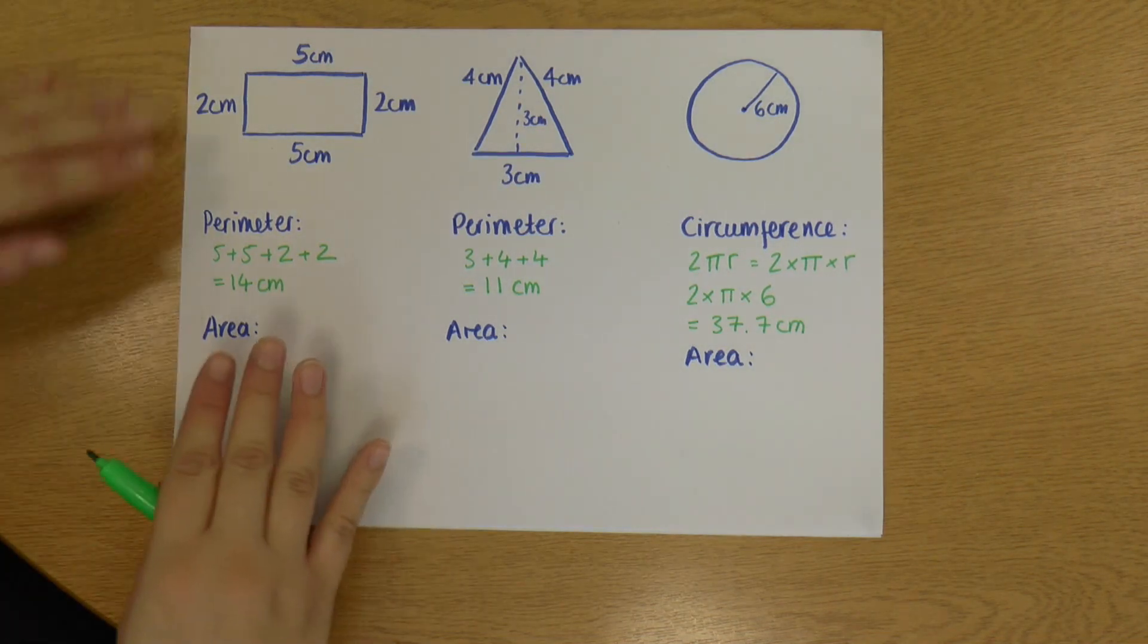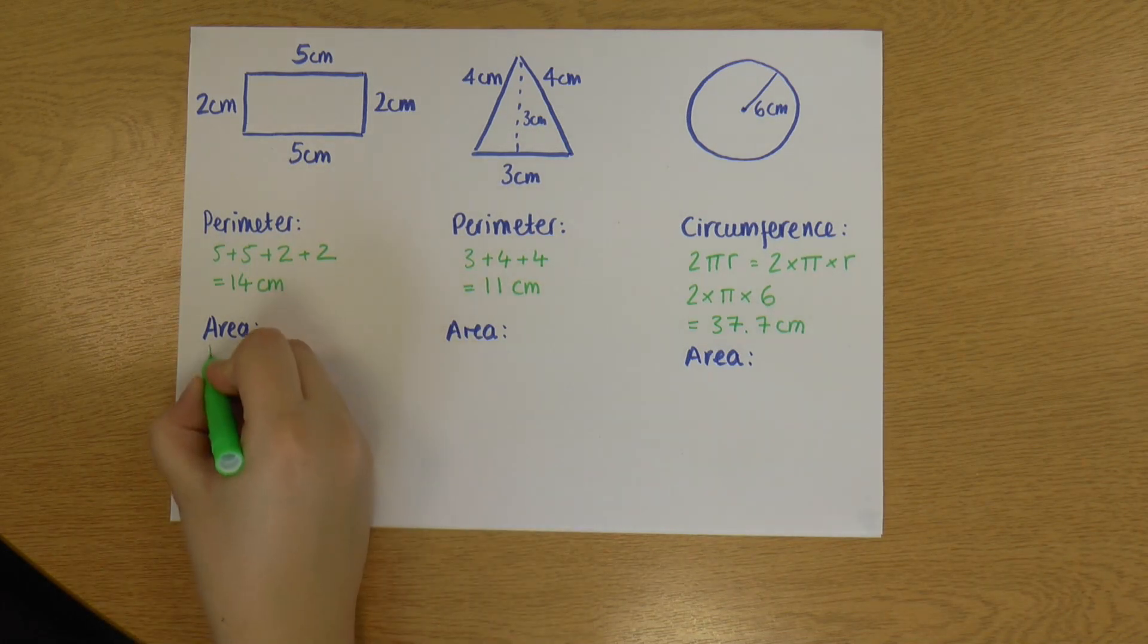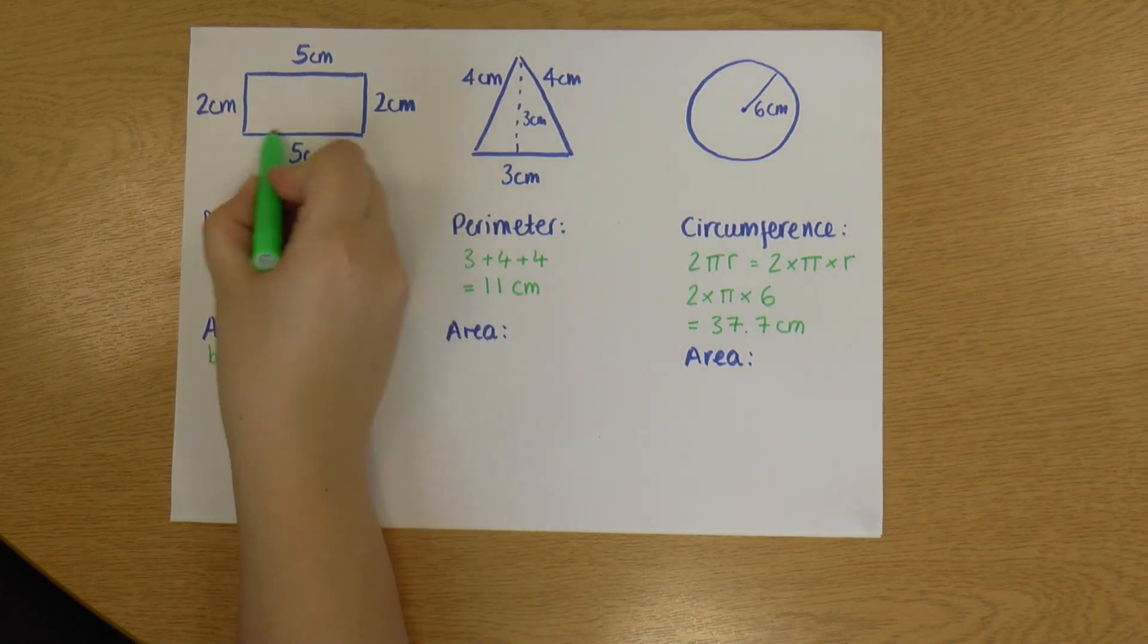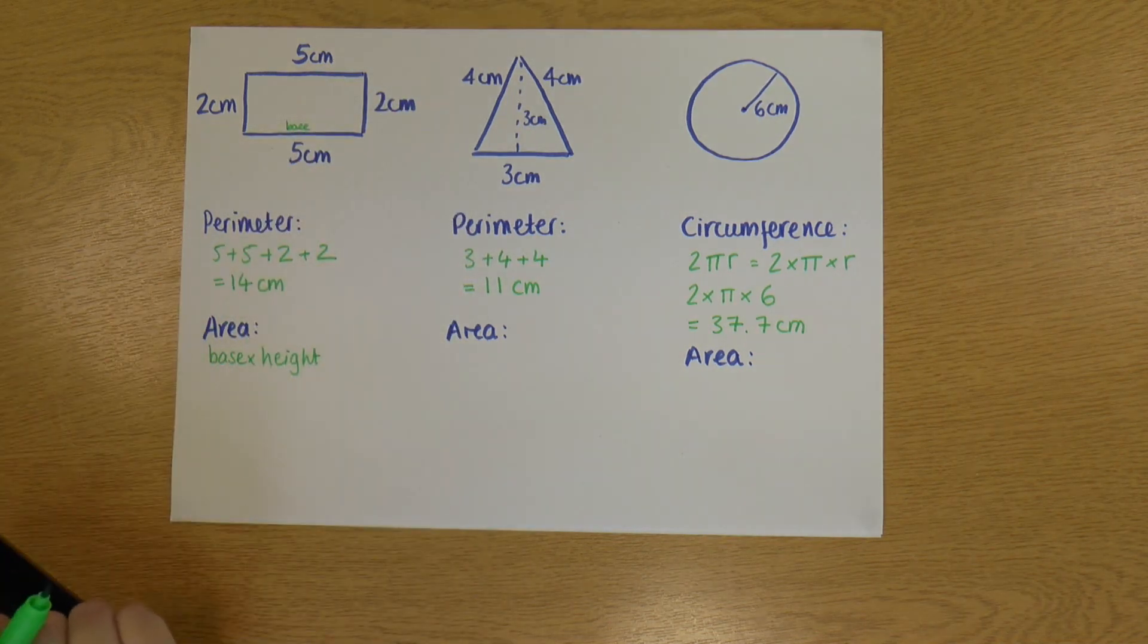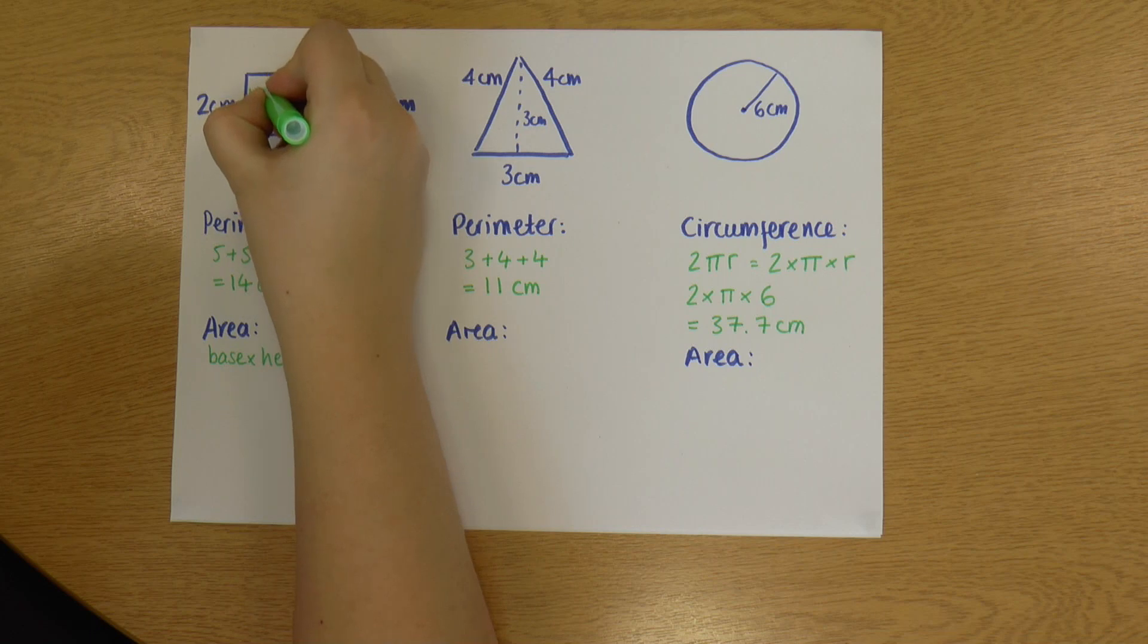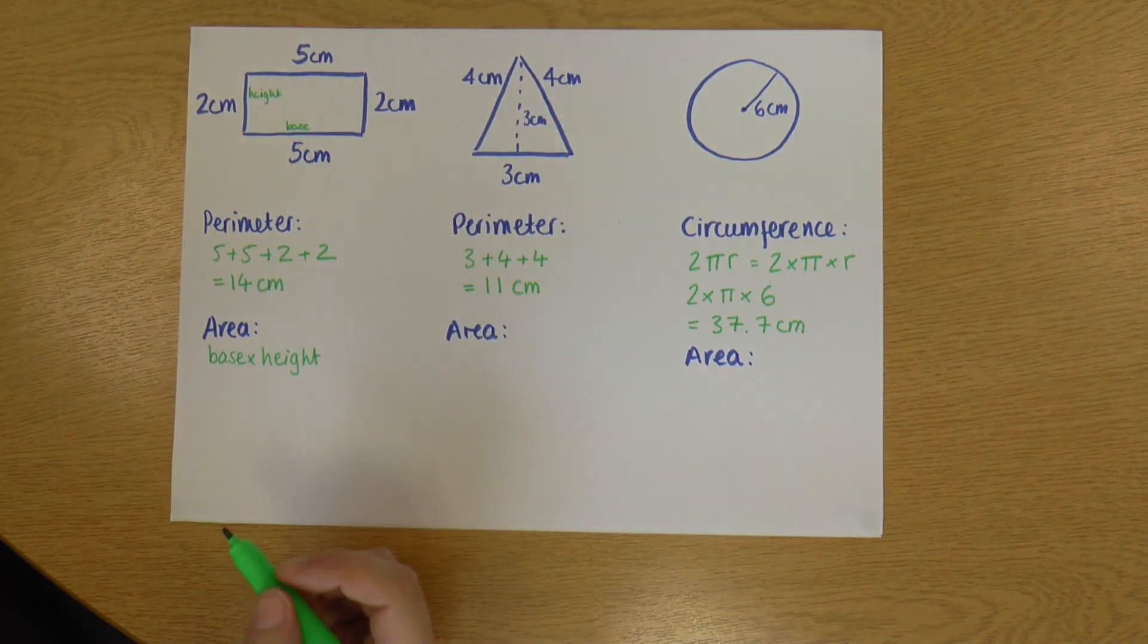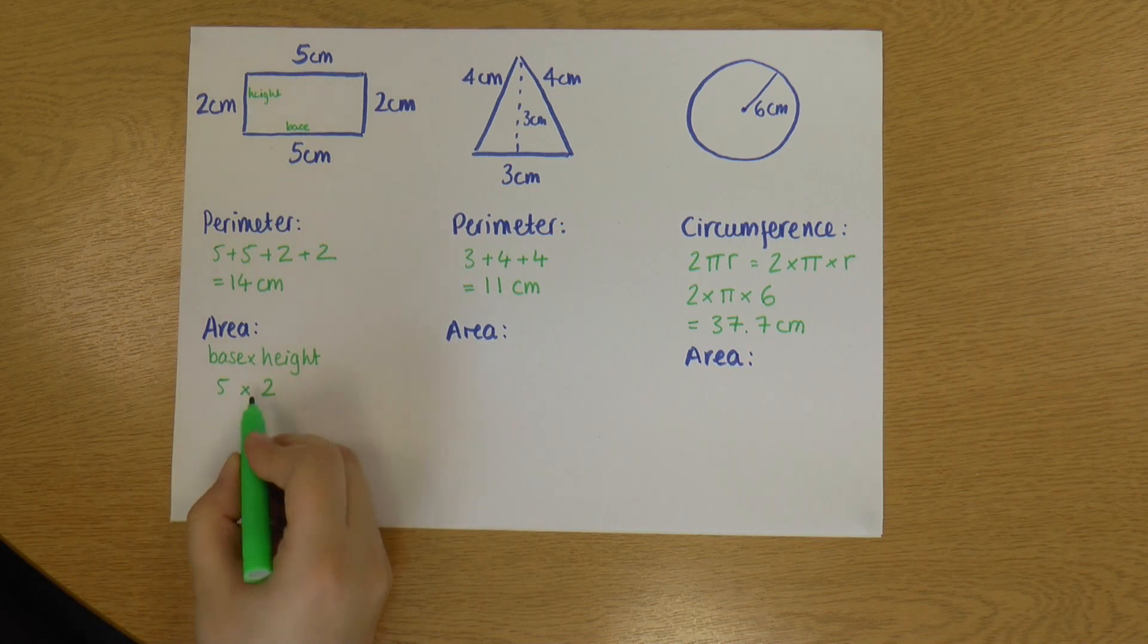So I'm going to start with my rectangle again. My area for a rectangle is base times height. So this is my base here, it means the bottom of the shape essentially. And my height is up to the side here. So my base is five, my height is two. So I'm doing 5 times 2.